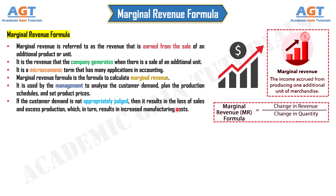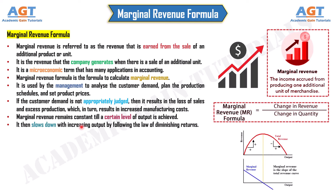Marginal revenue remains constant till a certain level of output is achieved. It then slows down with increasing output by following the law of diminishing returns.